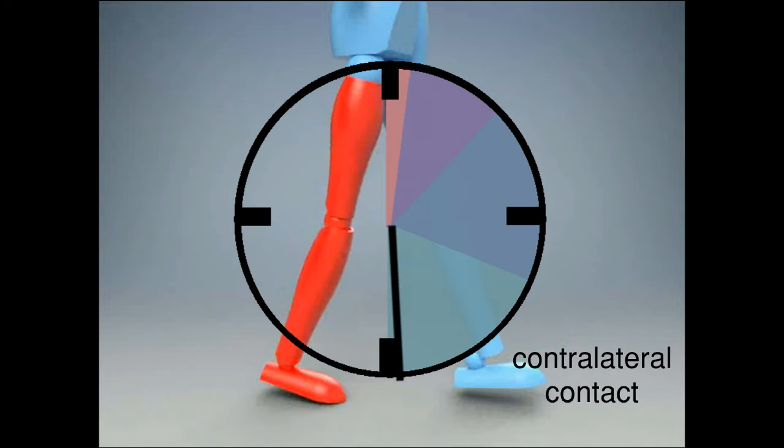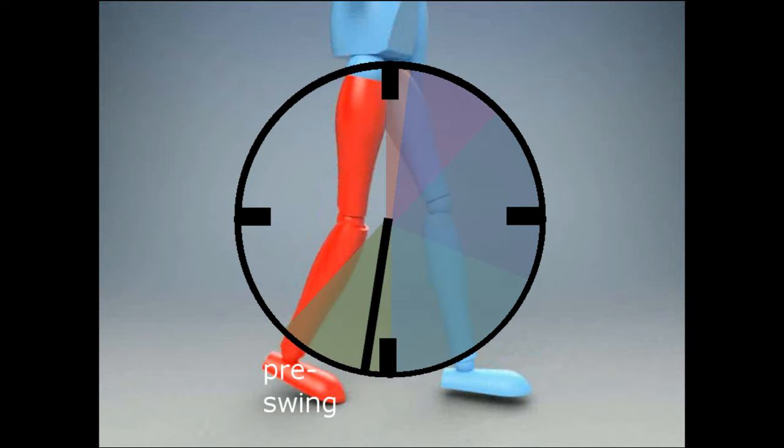After there is contralateral contact, meaning the other foot has touched the ground, pre-swing is when the reference limb pushes off the ground. This phase covers 12% of the cycle.